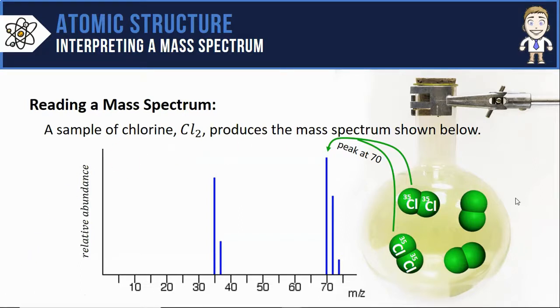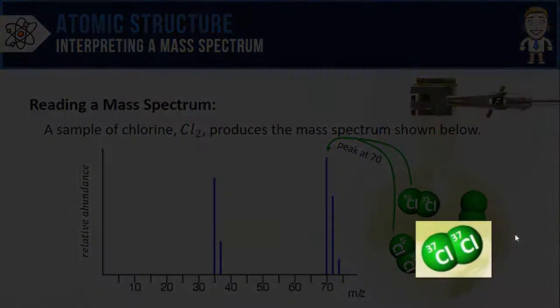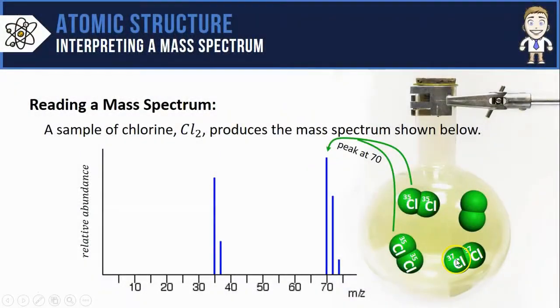But there's other chlorine isotopes too. So maybe some of the other Cl2 molecules are made of chlorine atoms where both are chlorine-37. This mass will then be 37 plus 37, 74, hence the very small, very uncommon peak we see here at 74.